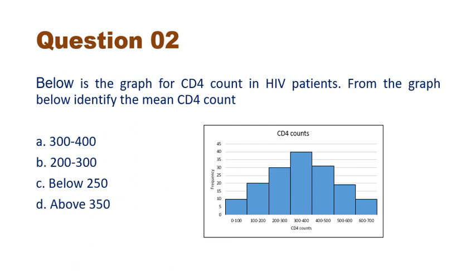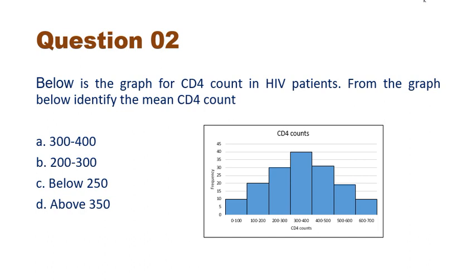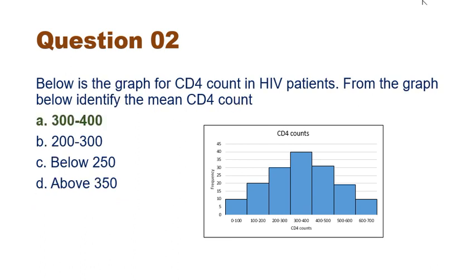In case of normal distribution, mean is equal to median is equal to mode. So because our data looks like a normal bell-shaped curve, median and mode both are in the range of 300 to 400, since median is the middle value and mode is the most repetitive value. Mean is sum of all observations divided by total number of observations. So because of normality, mean equals median equals mode, and the mean CD4 count will also lie somewhere between 300 and 400. Option A is correct.